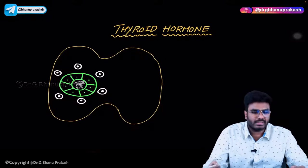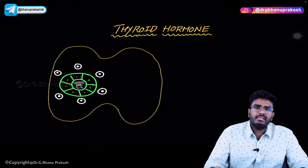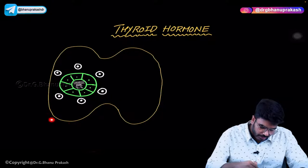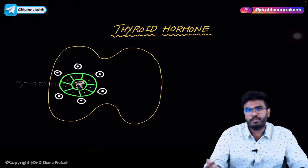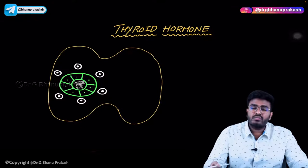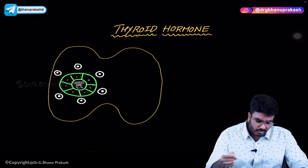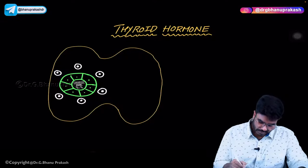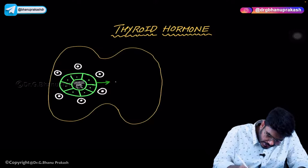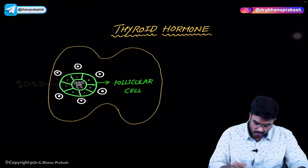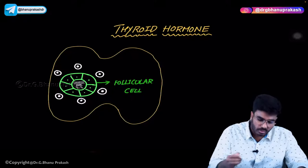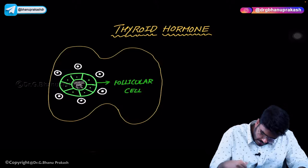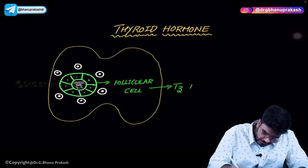Welcome back. In this video let's discuss about thyroid hormones. The simple diagram here represents the thyroid gland with its two lobes. Let's see what types of cells are present in the thyroid gland. The first cell type — the group of cells arranging in a concentric manner in green color — are called follicular cells. These follicular cells are the ones which produce and store thyroid hormones T3 and T4.